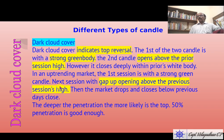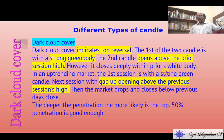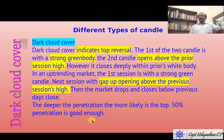Let us go through dark cloud cover. Dark cloud cover indicates a top reversal. The first of the two candles has a long green body, and the second candle opens above the prior session's high — that means it opens gap up. However, it closes deeply within the prior white or green body. It is an uptrending market. The first session has a strong green candle, next session gaps up above the previous session's high, then the market drops and closes below the previous day's close. The deeper the penetration, the more likely it is the top — 50% penetration is good enough.